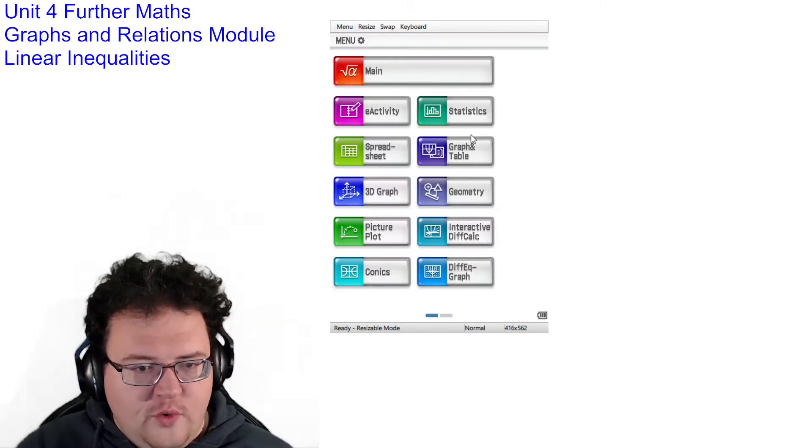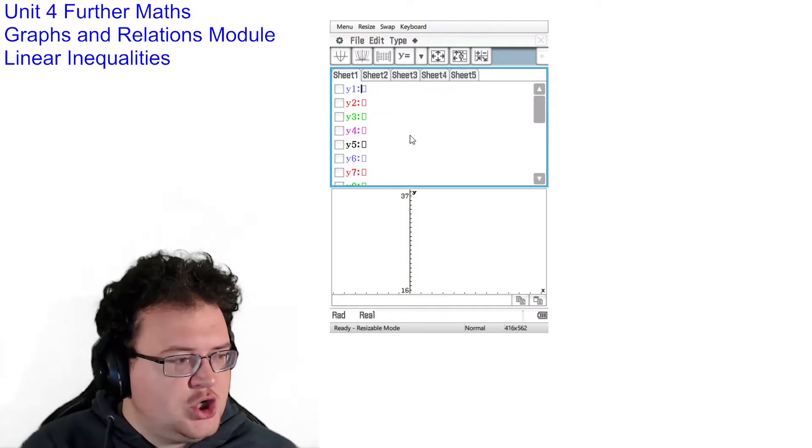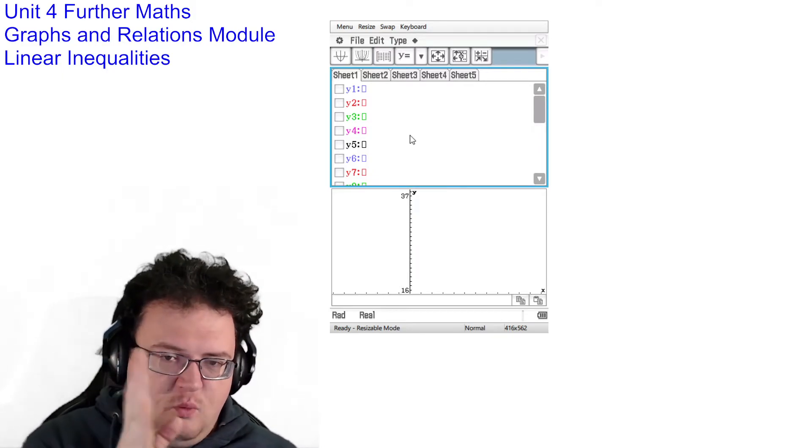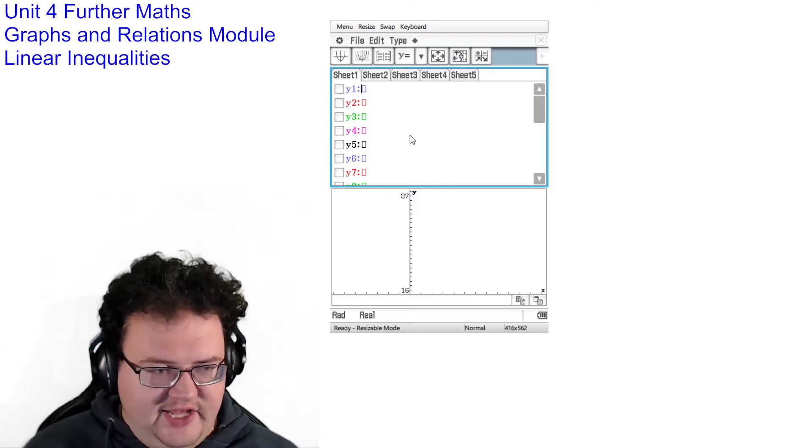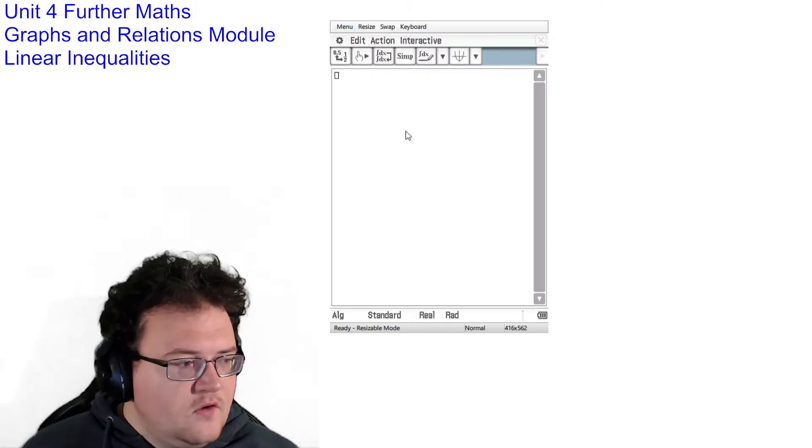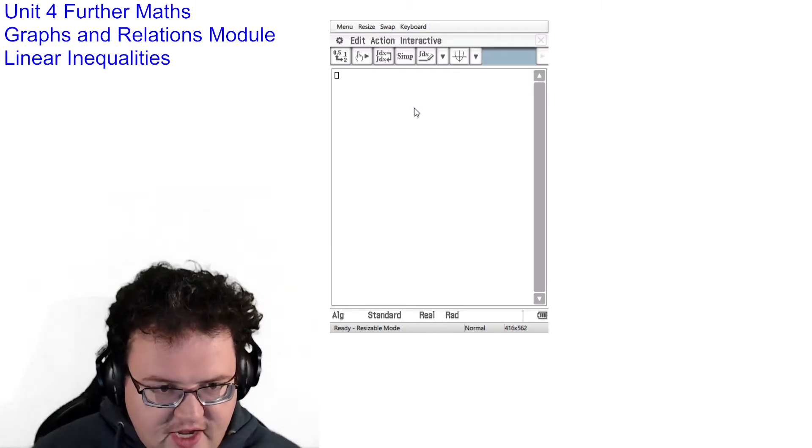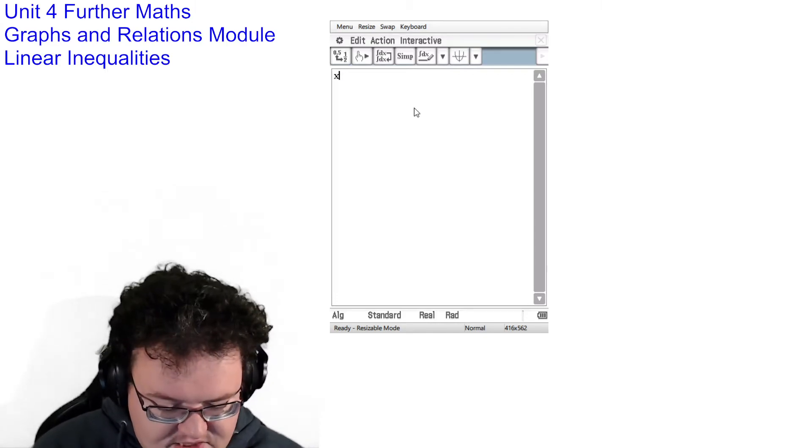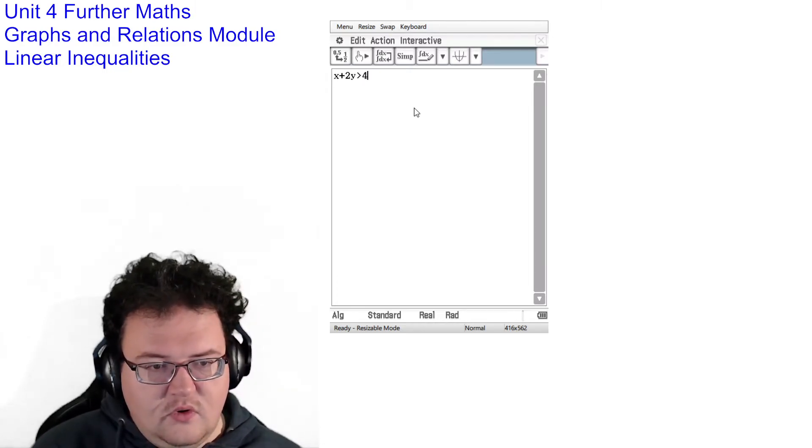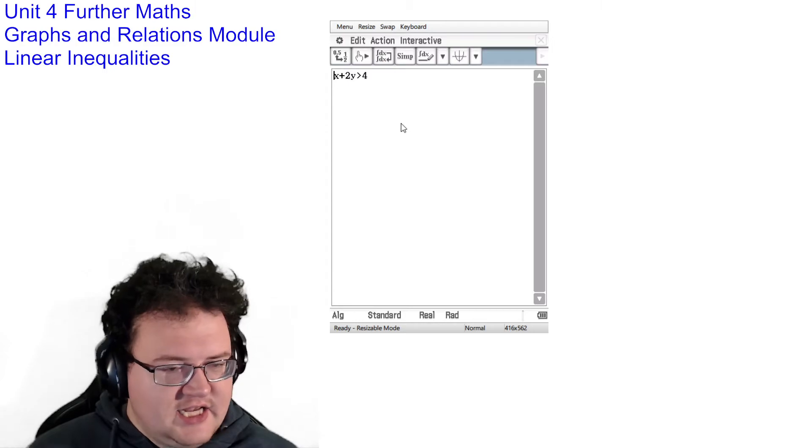I'll just get rid of my math methods work there. Now the problem is when we go into graph and table, everything is written in terms of y1 and then the equation. Which means that the y and the x need to be on different sides for this to work properly. So what we do is we use our CAS to do the rearranging for us. So for example, if I did have the statement x plus 2y is greater than 4.